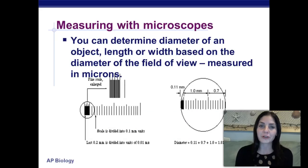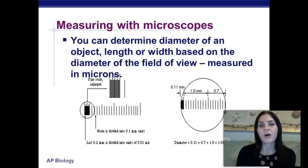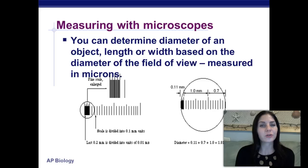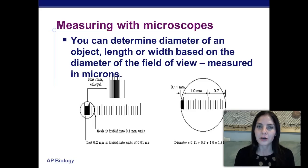When measuring with microscopes, you can determine the diameter, length, or width of an object based on the diameter of the field of view measured in microns. When we use a microscope, we use what we call microns. You did an exercise with this last year in the microscopic measurement lab, where you used a ruler and looked under the microscope at it, so you could determine how many microns were in each millimeter.